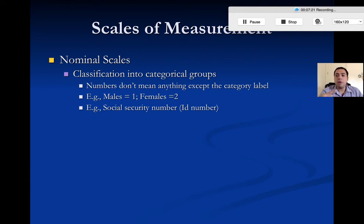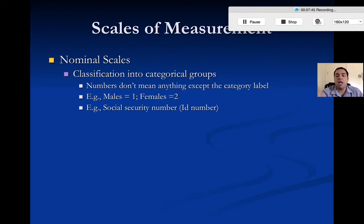Now, very important: the numbers don't mean anything beyond what their categories represent. Don't think that because males are number 1 that males came first or are better. It just means you gave that category the first value of 1, and females a value of 2. You can pick any values to represent those categories — you could use 98 for males and 22 for females and it wouldn't matter. The only thing that matters is that those numbers correspond to the correct categories. So with nominal, the numbers just represent categories — think of the 'N' for name.